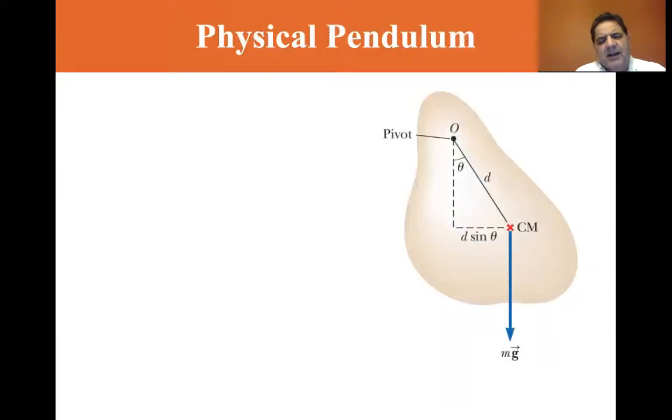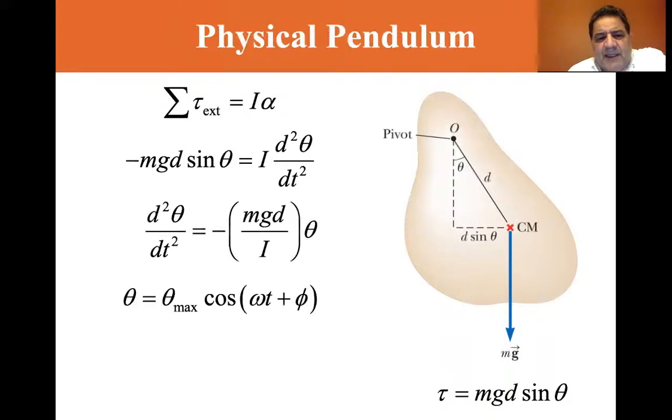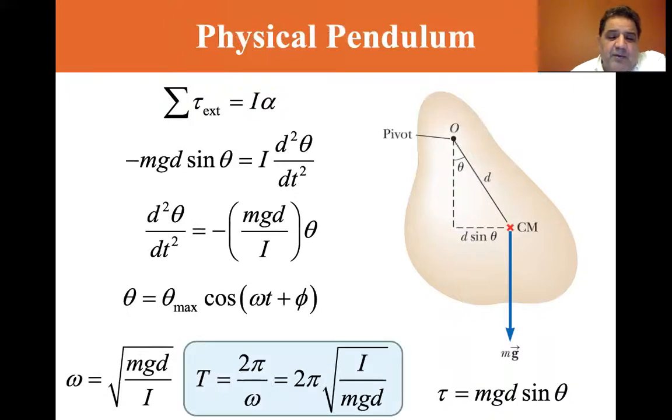Now let's look at the physical pendulum. Basically, the torque is equal to mgd sine theta. Torque is equal to I alpha. Basically I'm going to get down to the bottom. The omega equals the square root of mgd over I, the moment of inertia. So the period is equal to 2π over omega. So omega is equal to the square root of mgd over I.